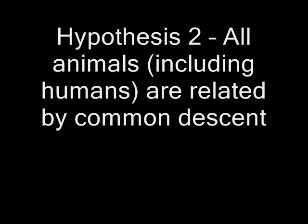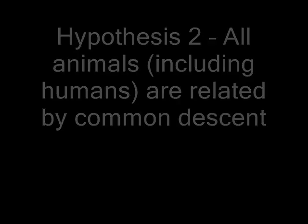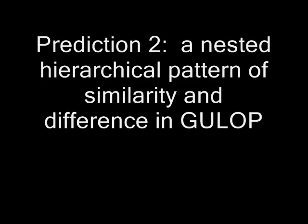Hypothesis two: All animals, including humans, are related by common descent. Prediction for hypothesis two: GULOP should follow the same specific nested hierarchical pattern of similarity and difference that is seen in functional genes and physical traits.